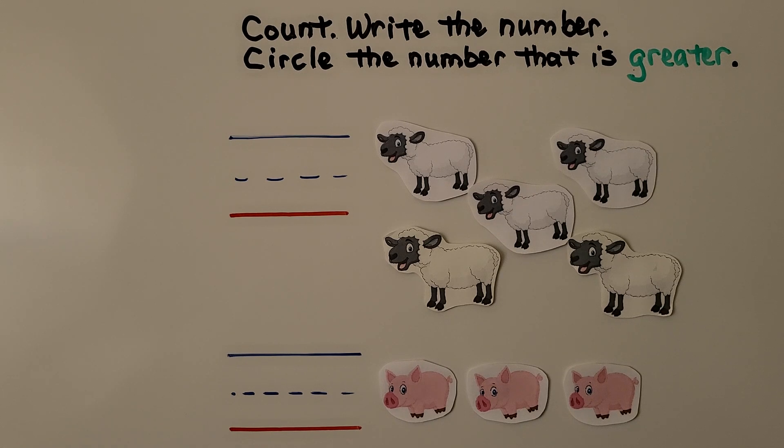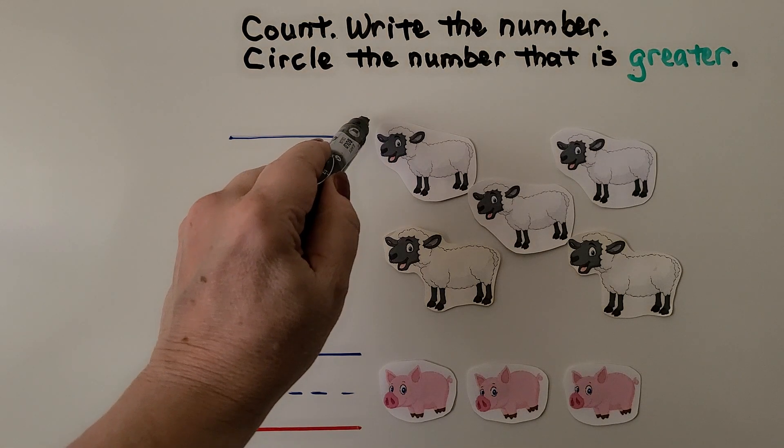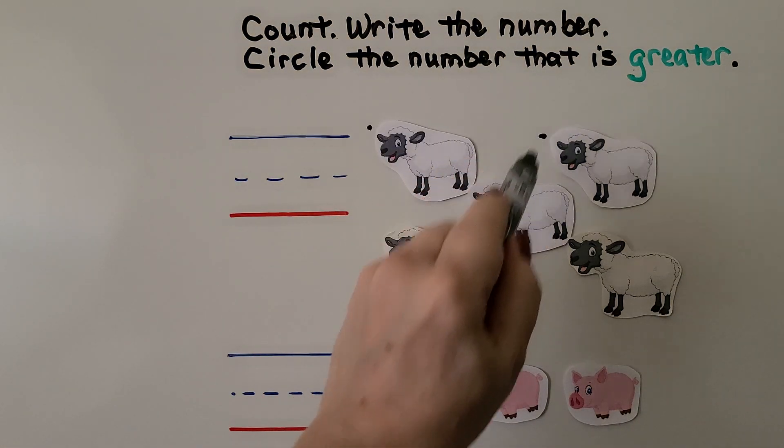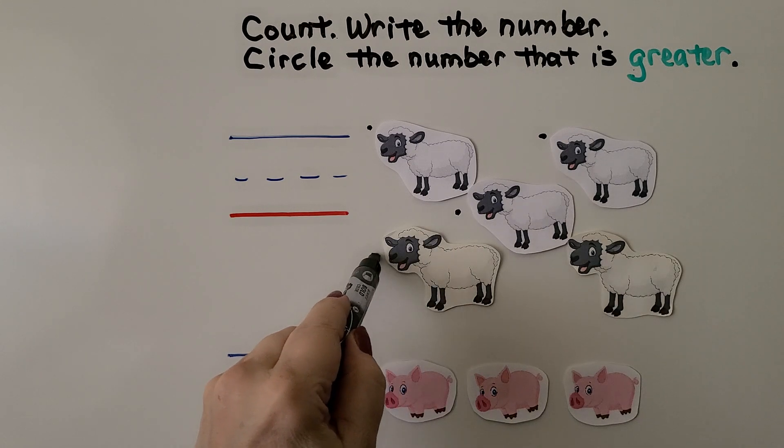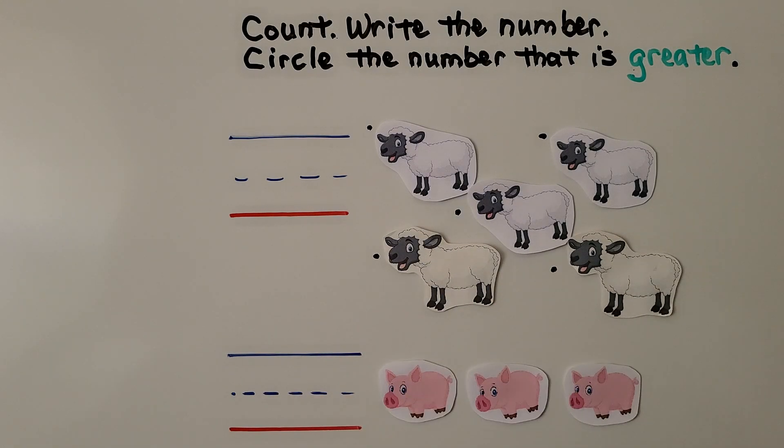Here we need to count, write the number, and then circle the number that is greater. Let's count the sheep. I count 1, 2, 3, 4, 5. We can write the number 5.